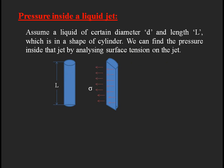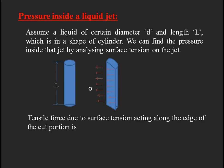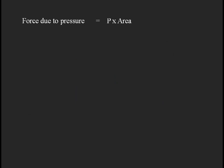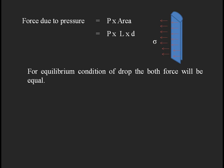For the liquid jet, the tensile force due to surface tension acts along the edge of the cut portion. The length it covers is two times l — one l on each edge — so force due to surface tension equals σ × 2l. The force due to pressure is p × area, where the cut portion is rectangular with area l × d, so force due to pressure equals p × l × d.